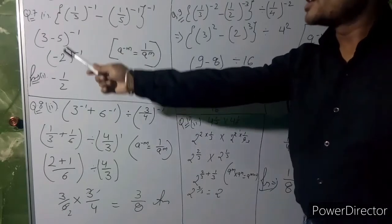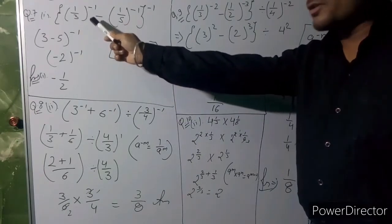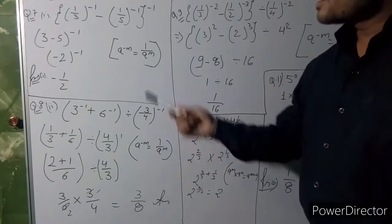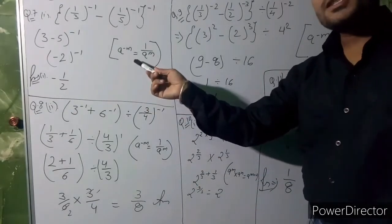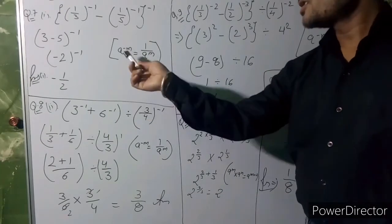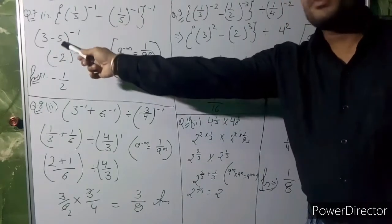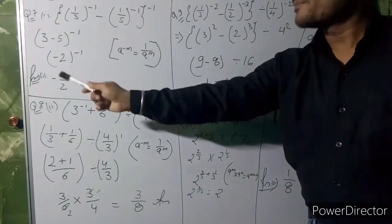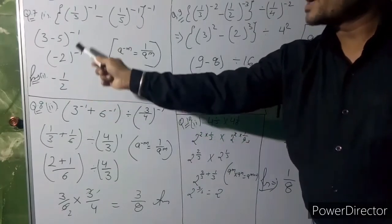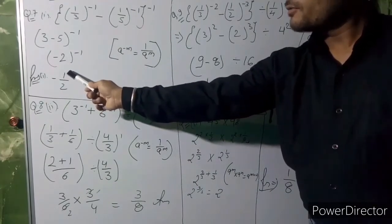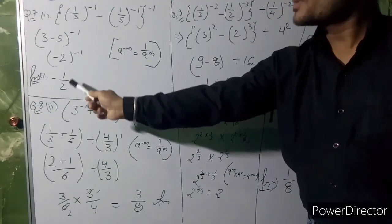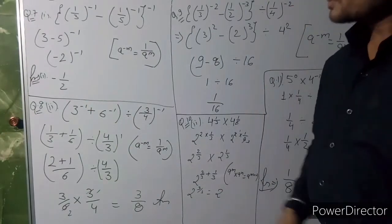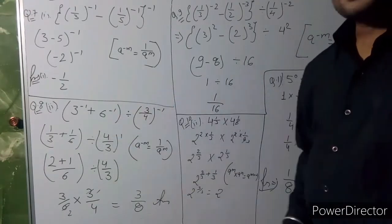Question 7: evaluate 1/(3⁻¹) - 1/(5⁻¹). We have read one identity — to remove the negative power we use the law: a⁻ᵐ = 1/aᵐ. So 1/3 becomes 3 and 1/5 becomes 5, giving us 3 minus 5 raised to the power minus 1. That becomes (−2)⁻¹, and applying the law again gives 1 upon −2, so the answer is minus 1 upon 2.